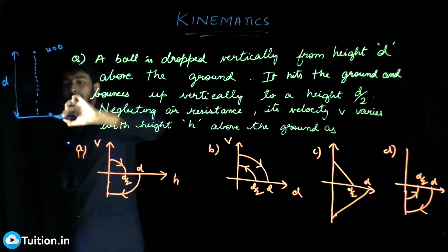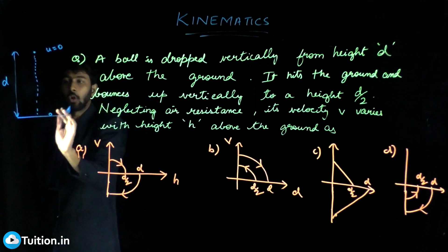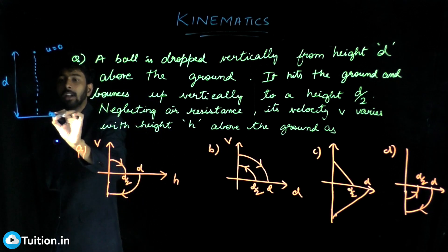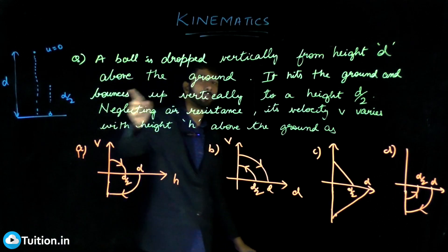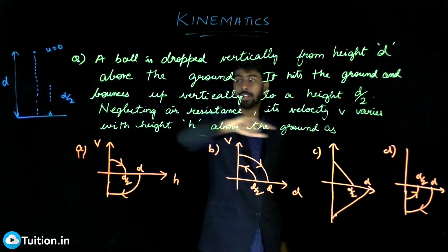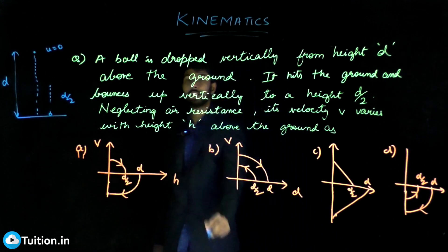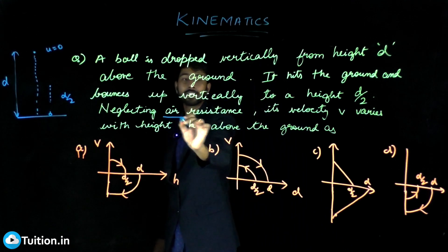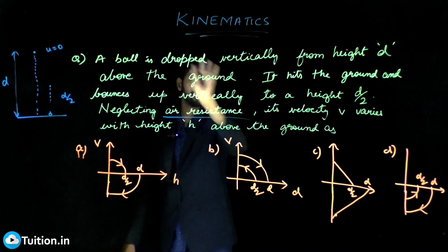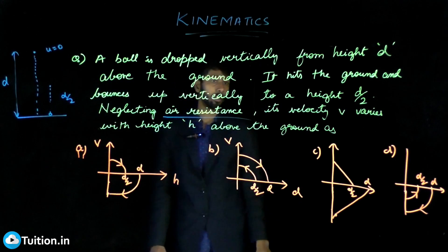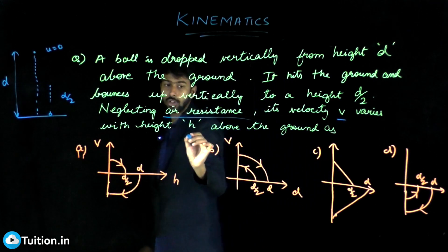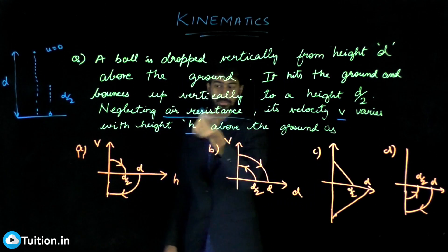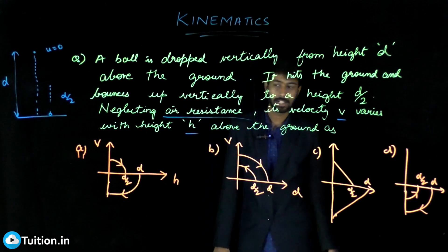After hitting the ground, it bounces back — I'm drawing it to the side so you can visualize better — but it goes up only to a height d/2. You need to neglect air resistance. The problem asks you to find the velocity v as a function of height, and you have to choose between four options.